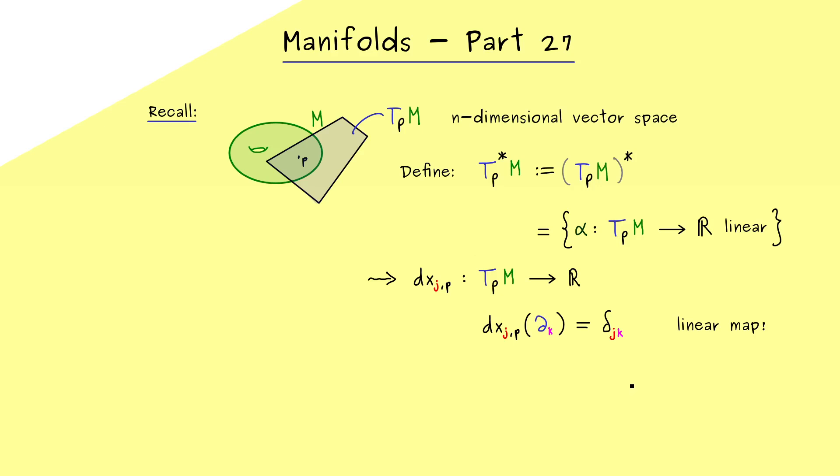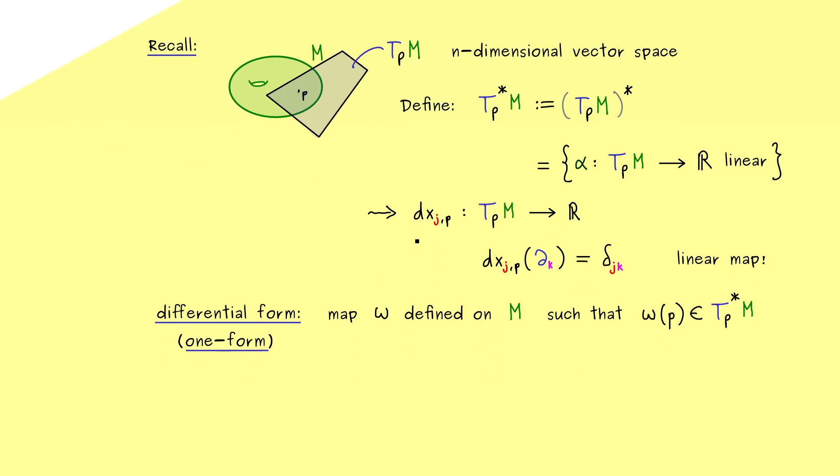Such a linear map here we call a one-form. We will put meaning to the word differential form for a manifold. This will be a map omega defined on the manifold M, such that the value omega of p is a special linear map. For example, it's an element of T_p* M. This is the special case we call a one-form, and we already know one example, namely dx_j.